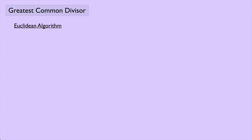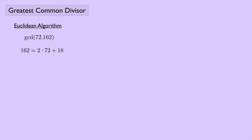So here's the how. Let's look at the greatest common divisor of 72 and 162. Well, 162 equals 2 times 72 plus 18. What we're doing is we're taking the larger of these two numbers, 162, and seeing how many times the smaller of the two goes into it — in this case 2 times — with a remainder of 18.